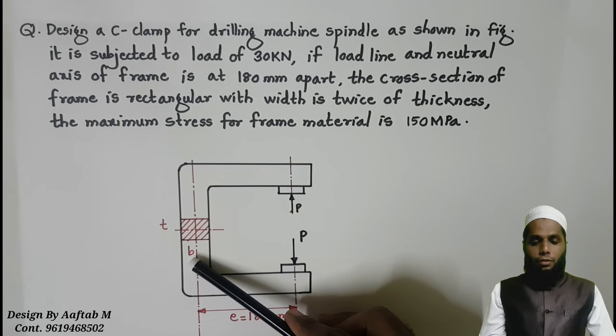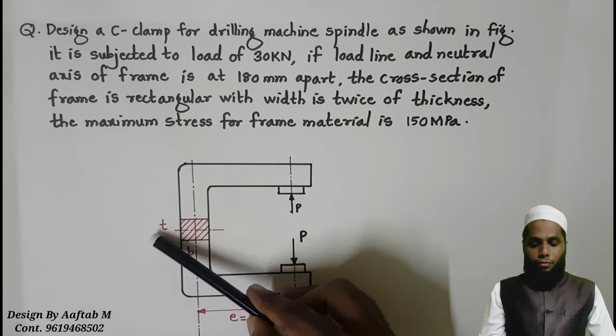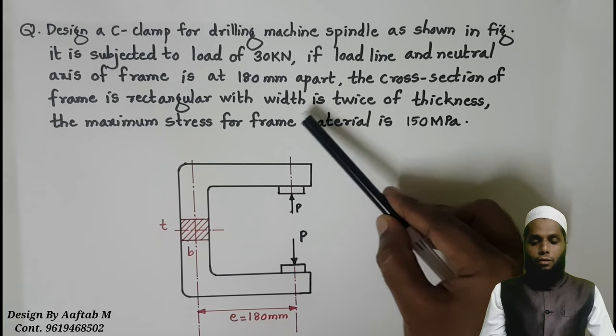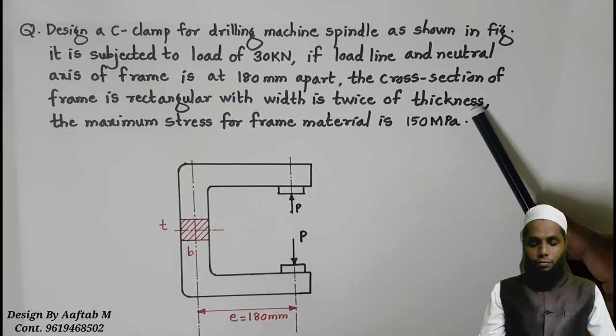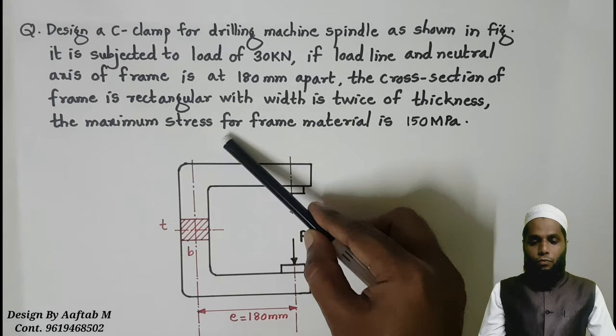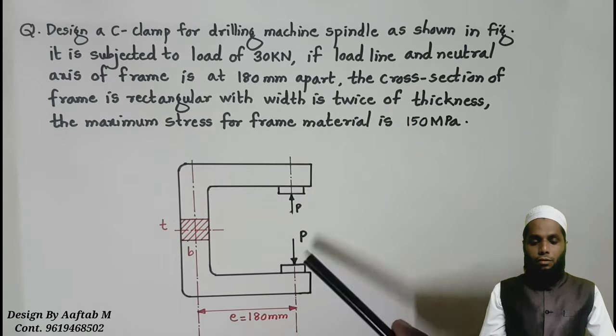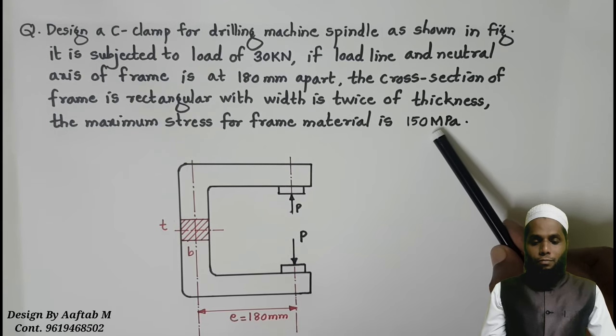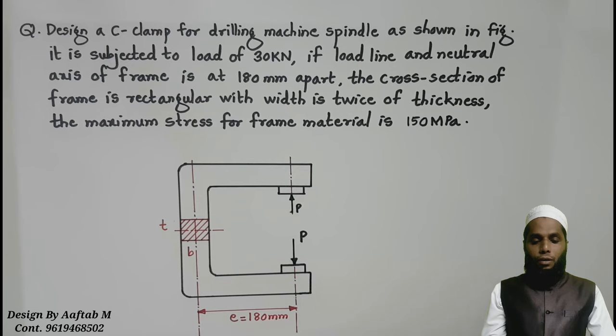The cross section is rectangular with width and thickness given in the proportion, that is width is twice of thickness. Here we have maximum stress given as 150 MPa.